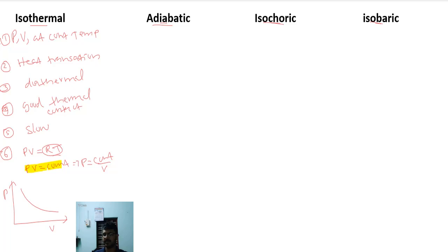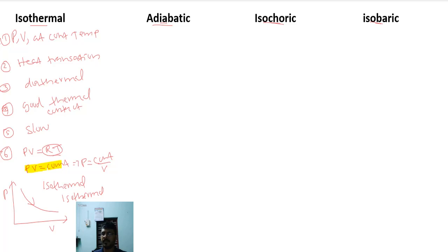As pressure increases, volume decreases, giving a hyperbolic curve. If the arrow is in the direction of increasing volume, this is isothermal expansion. If the arrow is in the direction of decreasing volume, this is isothermal compression. That covers the isothermal process.